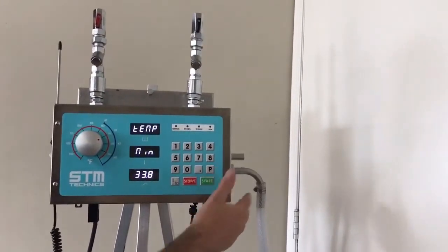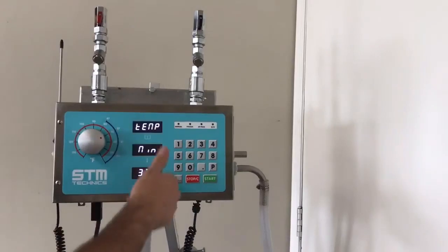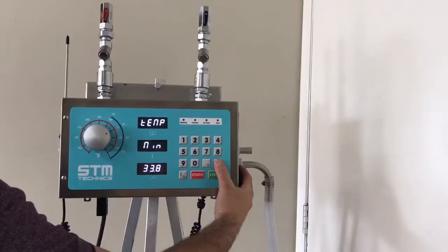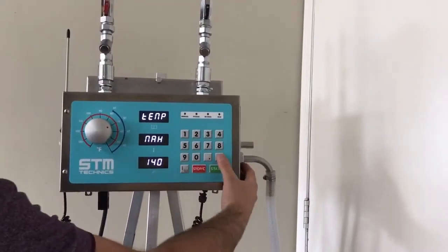Moving along we go to our next parameter window and it just gives our readout. The unit is set to read a minimum of 33.8 degrees Fahrenheit, a maximum of 140 degrees Fahrenheit.